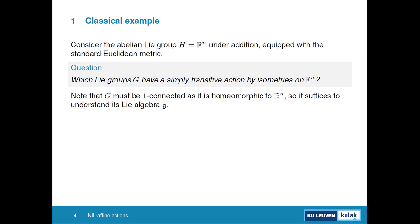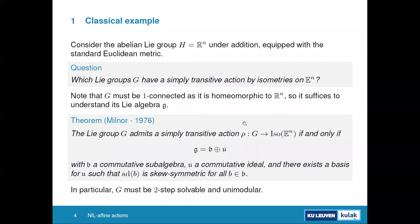Milnor showed in 1976 that the Lie algebra has a very specific form: an abelian ideal, an abelian subalgebra, together spanning the whole Lie algebra, with the action by skew-symmetric matrices. So the Lie group G is two-steps solvable and unimodular — a very rigid structure.